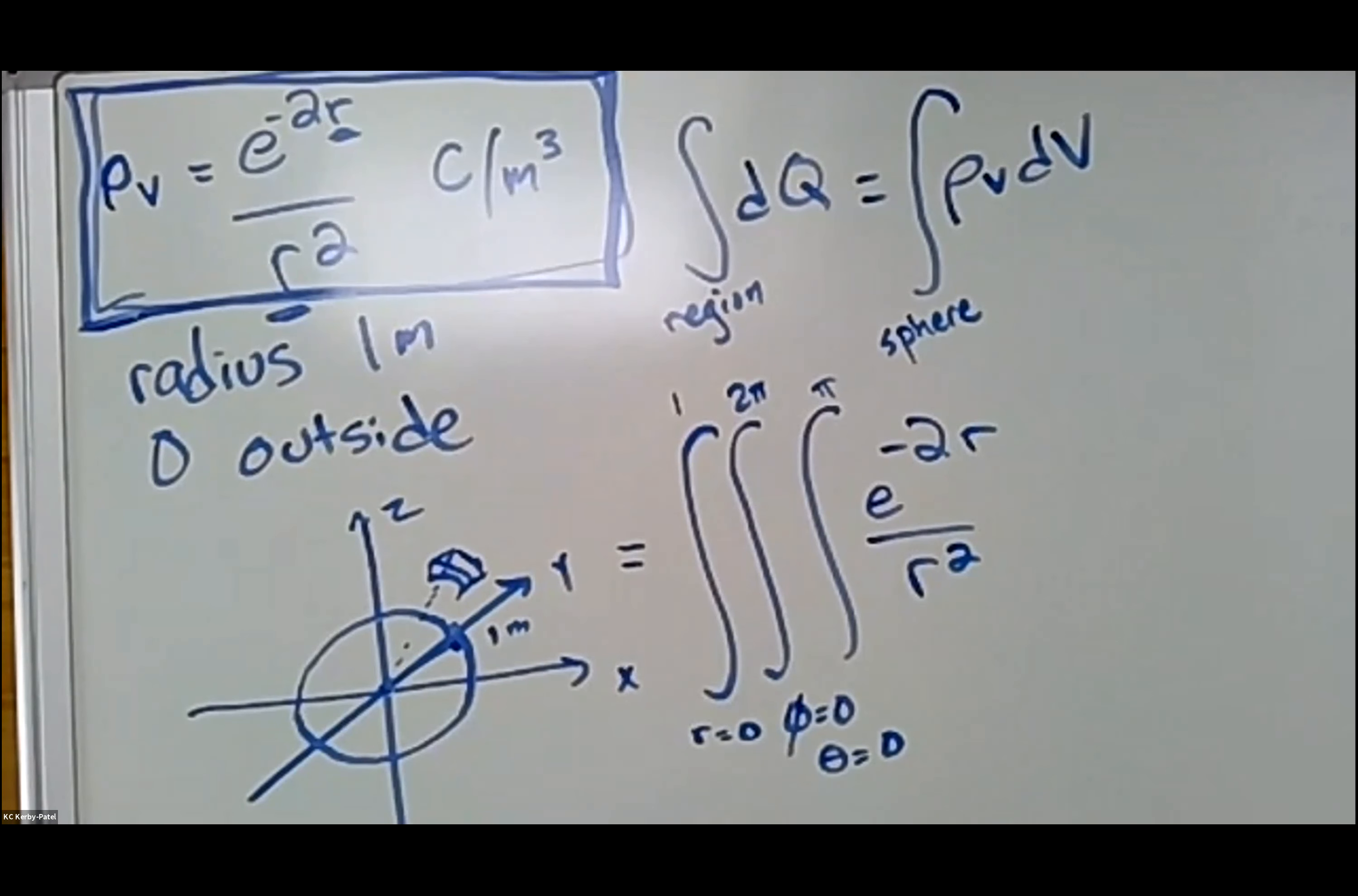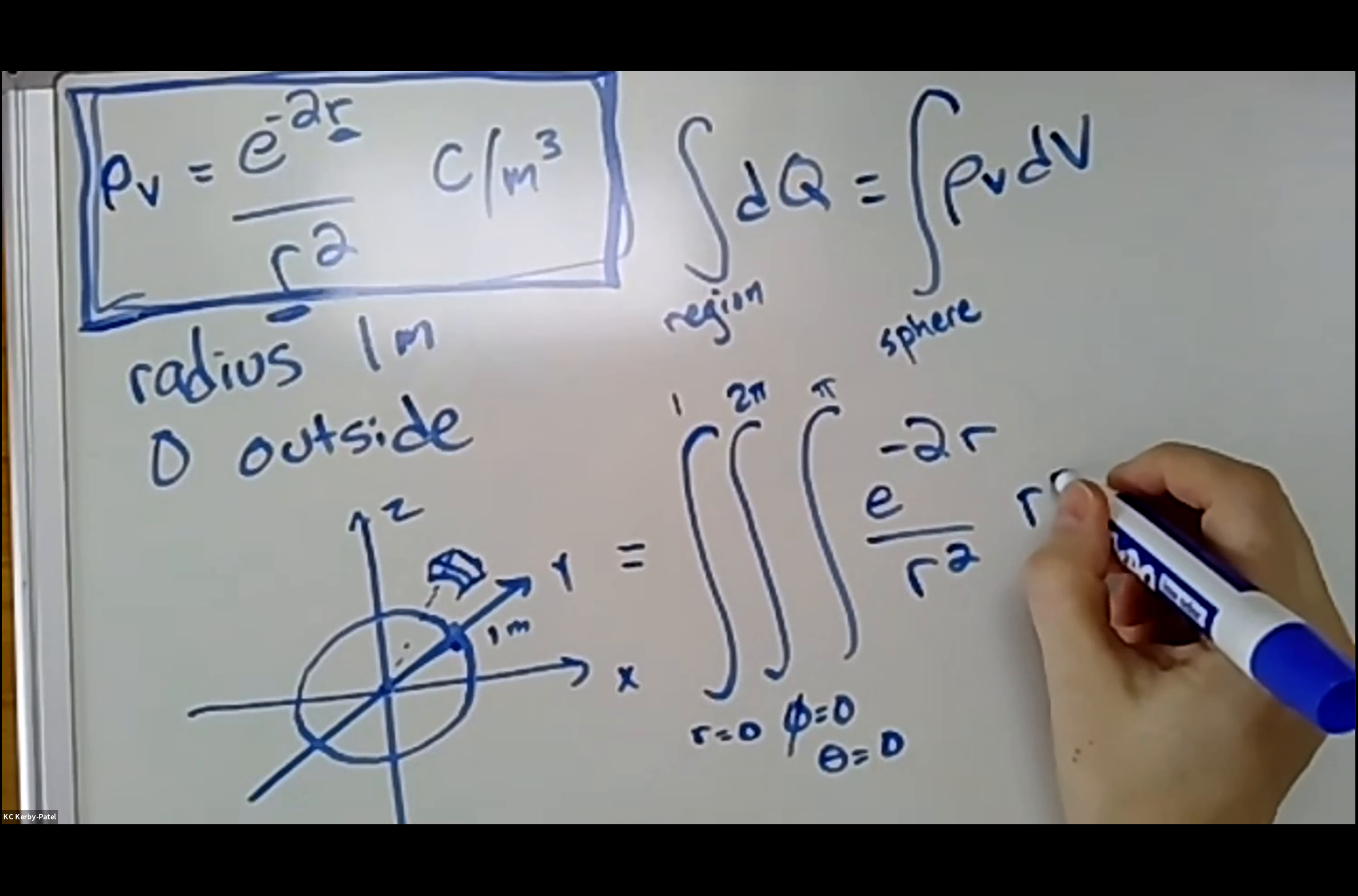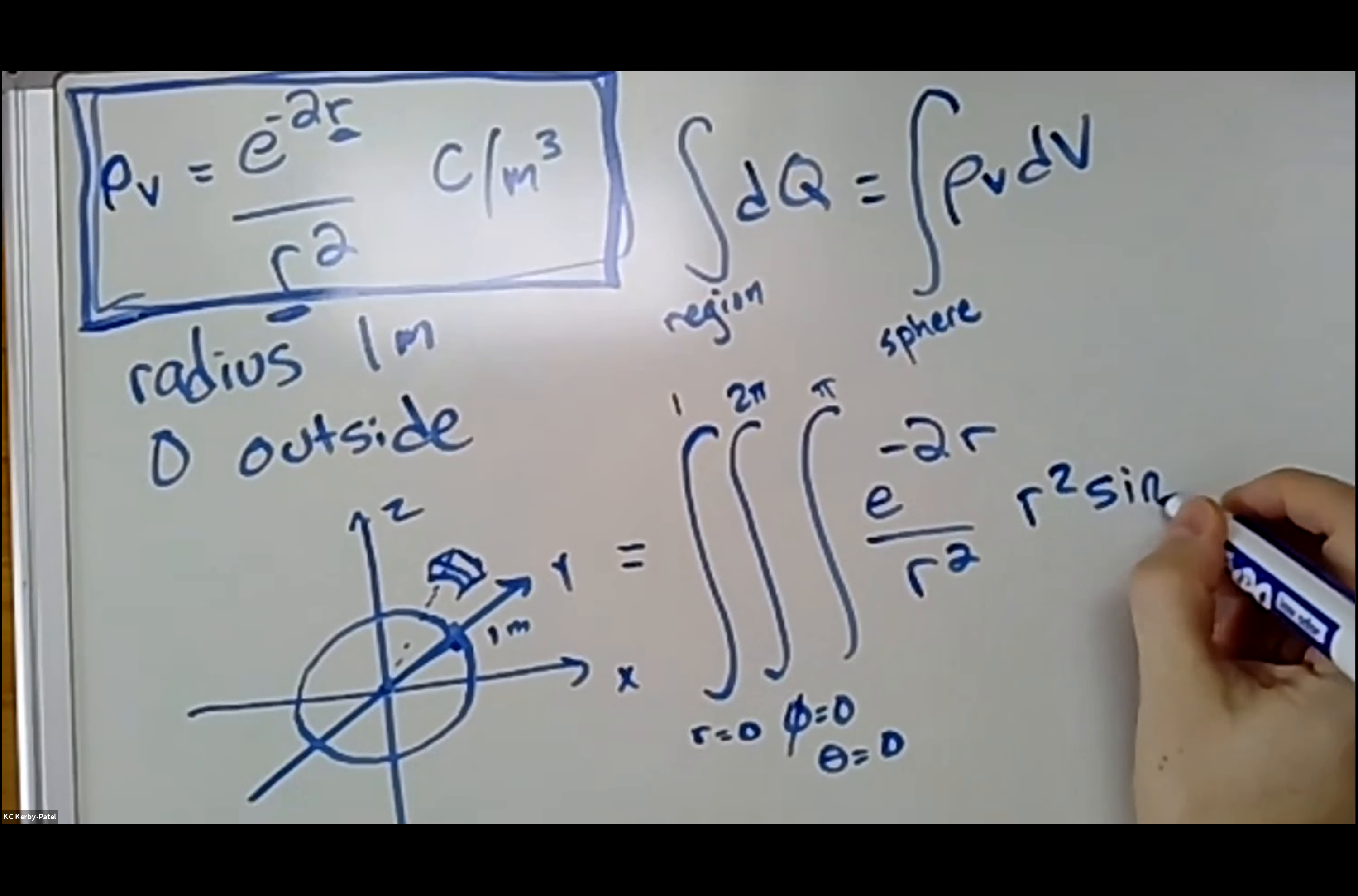Now I can write down ρ_v: e^(-2r)/r², and then I can write down dV, which is, if you remember, r² sin(θ) dr dθ dφ.